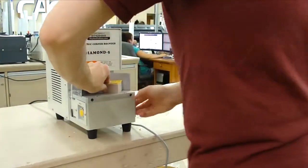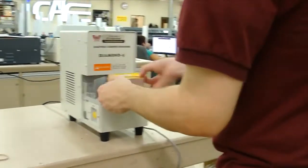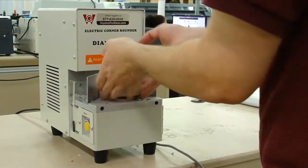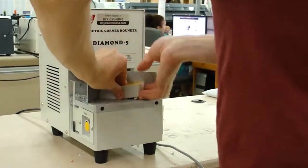We're doing a project here using the Achilles Diamond 5 Electric Corner Rounder. The Diamond 5 is crafted with quality components and is electric operated for easy corner rounding.